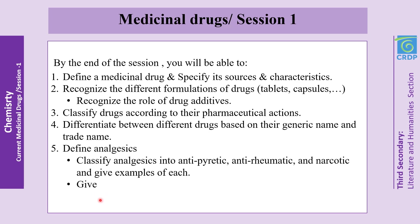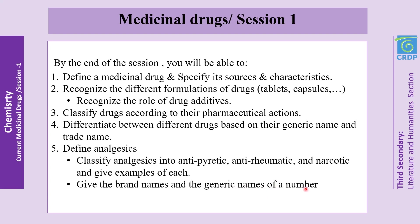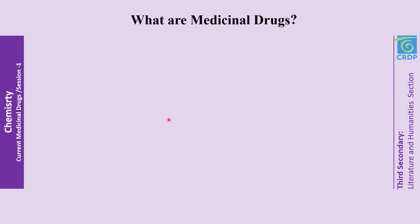Number five, define analgesics. In this category you'll be able to classify analgesics into antipyretic, antirheumatic, and narcotic, and give examples of each, as well as give the brand names and generic names of analgesics such as aspirin and paracetamol.